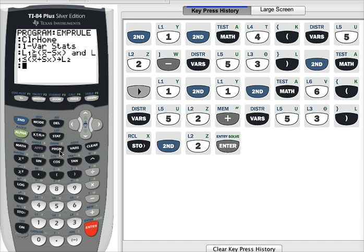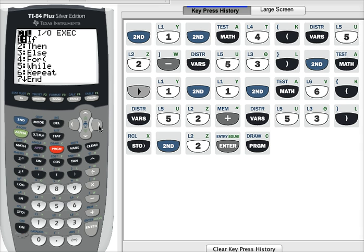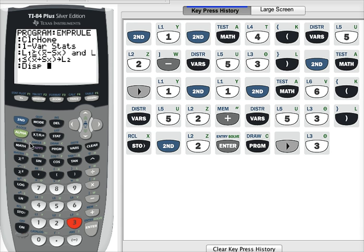To display, program button, right arrow. Display is option number 3.